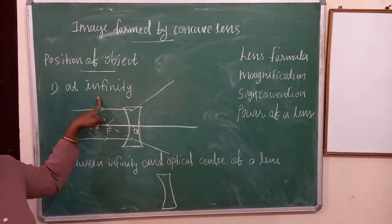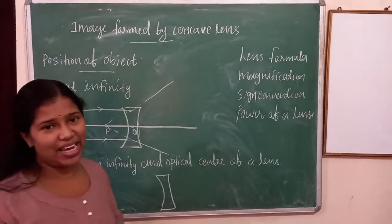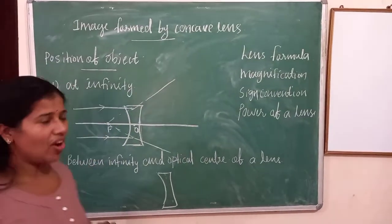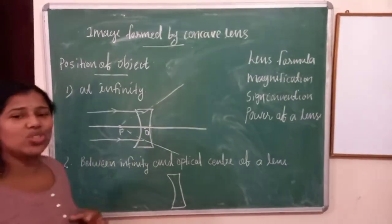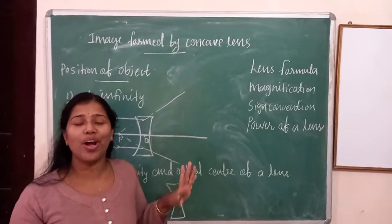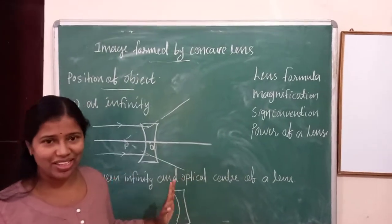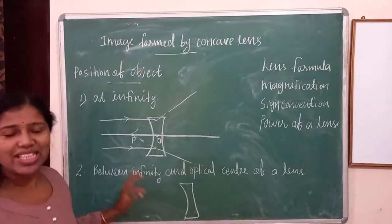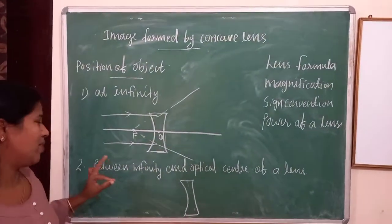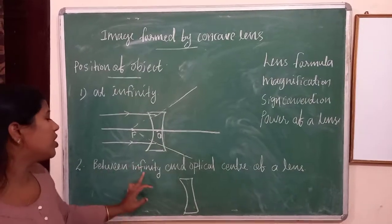Object at infinity — where will we get the image? At the focus. In case of concave lens, there is no doubt at all — it is virtual, not a real image. It is a virtual image. Next is the second case.